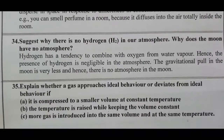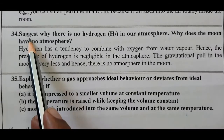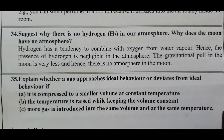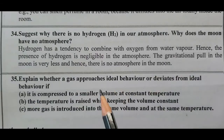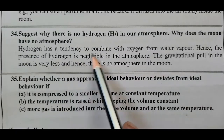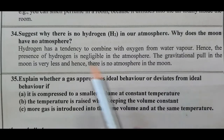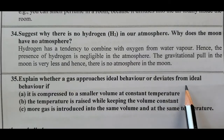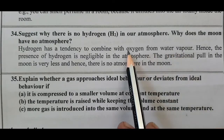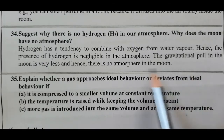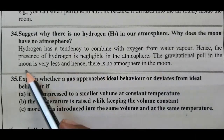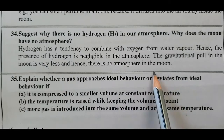Question number 34: Suggest why there is no hydrogen in our atmosphere and why does the moon have no atmosphere? Hydrogen has a tendency to combine with oxygen from water vapour, hence the presence of hydrogen is negligible in the atmosphere. The gravitational force of the moon is very less, and hence there is no atmosphere on the moon.